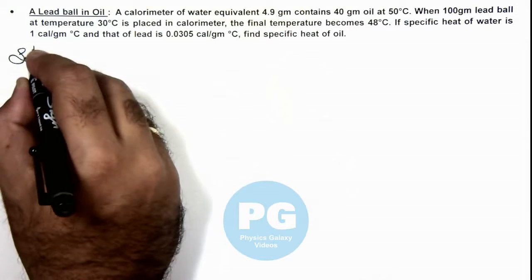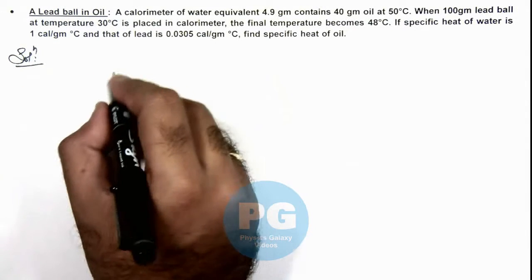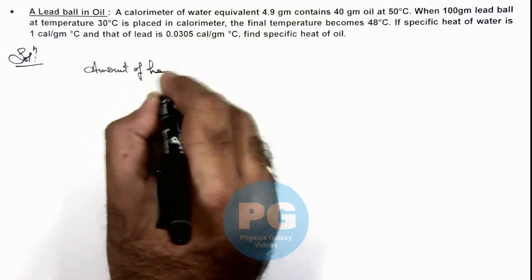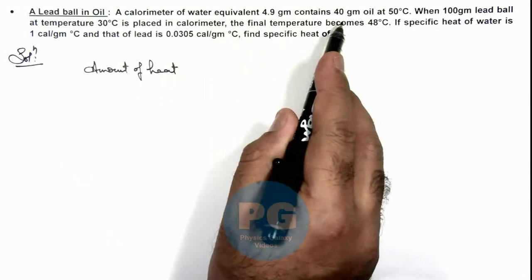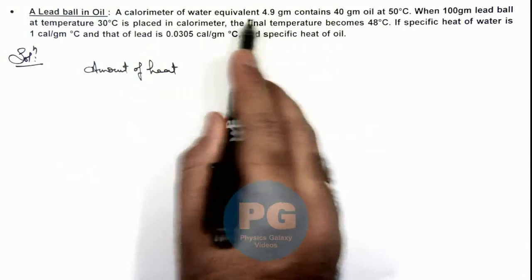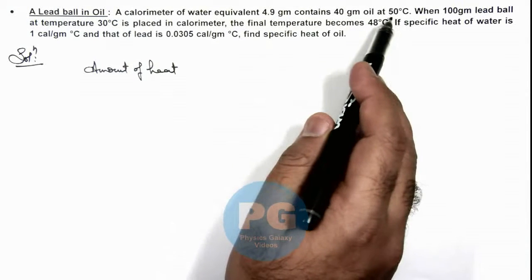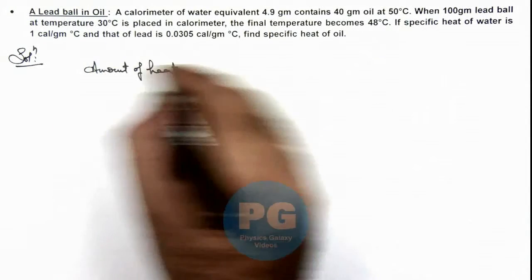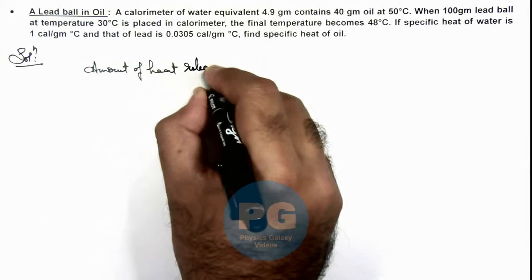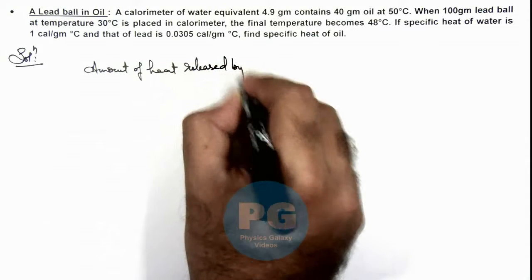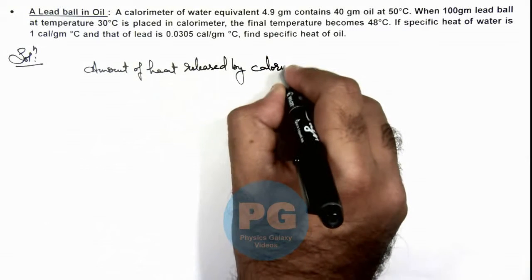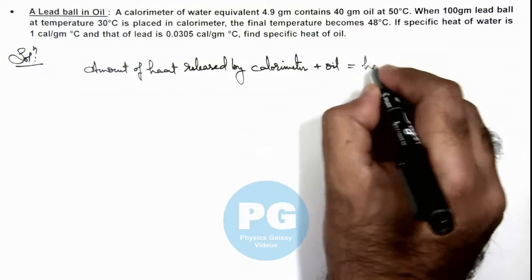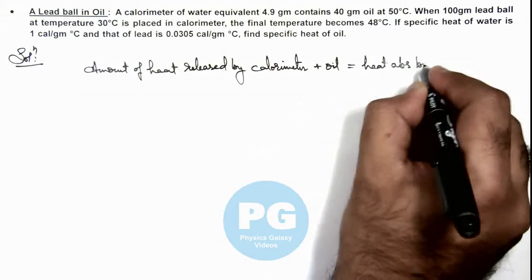In this illustration, we can write the amount of heat exchanged. The water equivalent of calorimeter is 4.9 gram and 40 gram of oil were at 50 degree centigrade, and the 100 gram lead ball was added at 30 degree. The amount of heat released by the calorimeter plus oil should be equal to the heat absorbed by the lead ball.